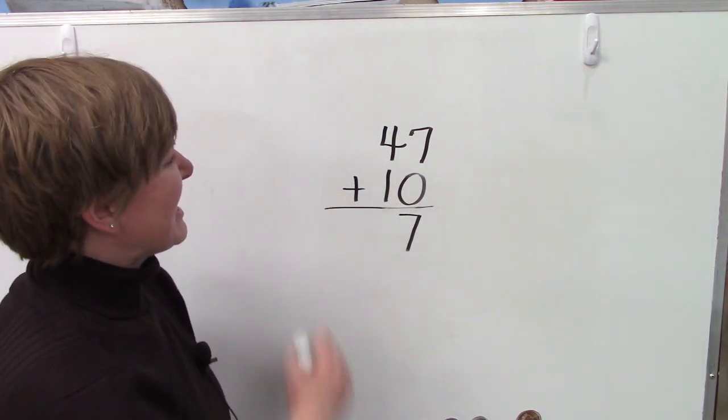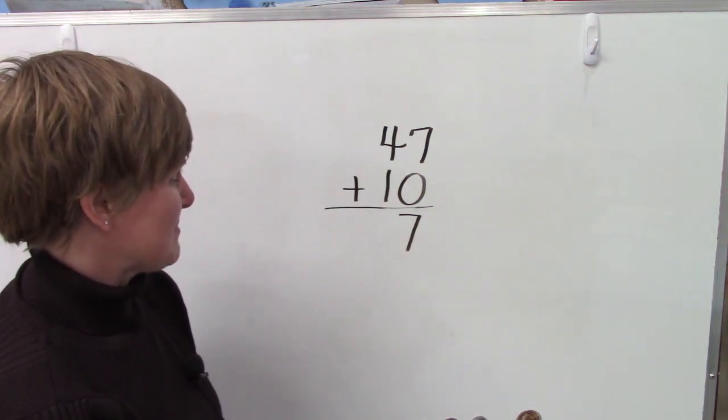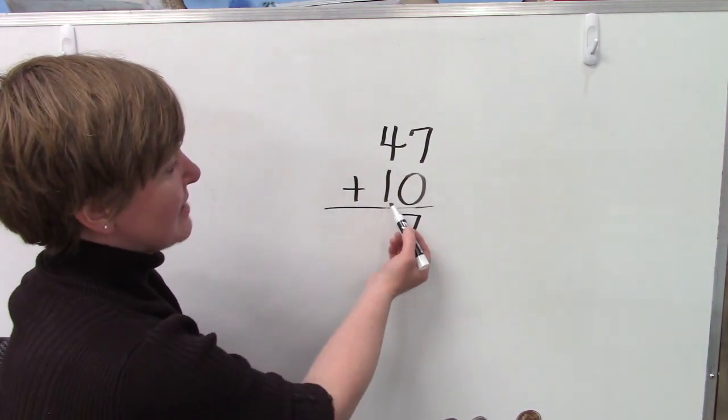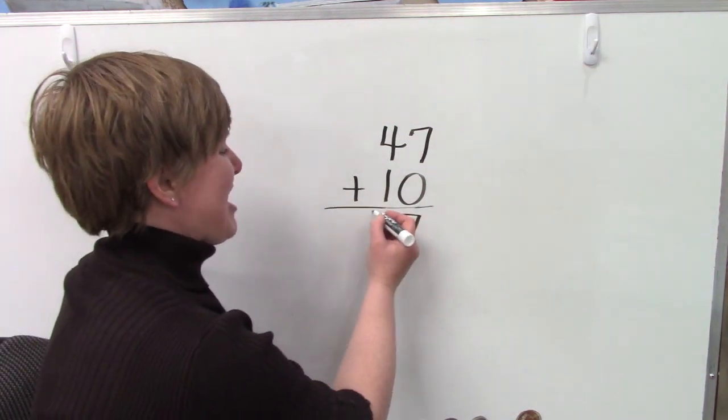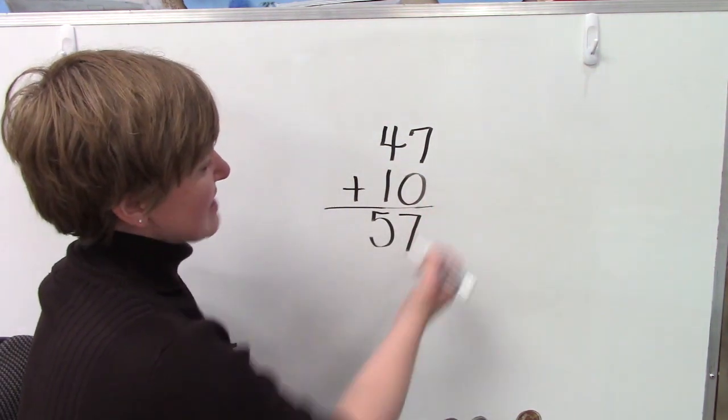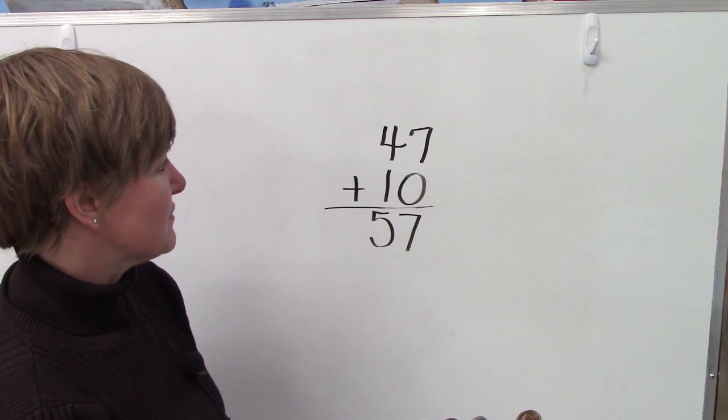Now we're going to look in our tens place. We have a 4 and a 1. You know what 4 plus 1 is. It's 5. 47 plus 10 is 57.